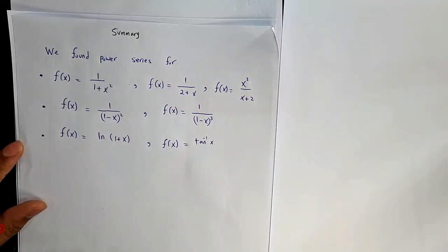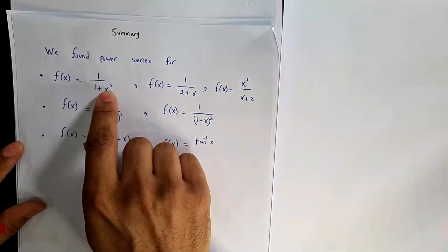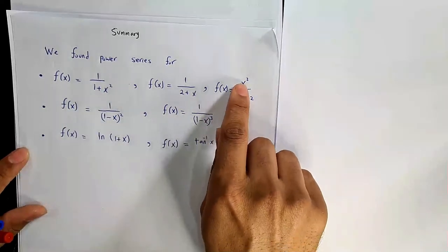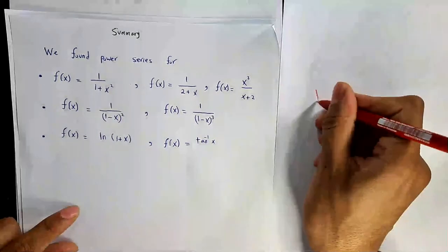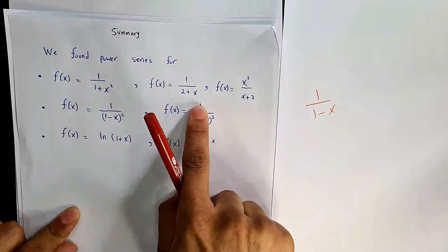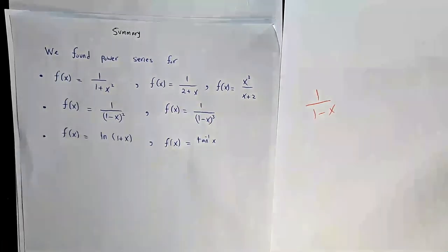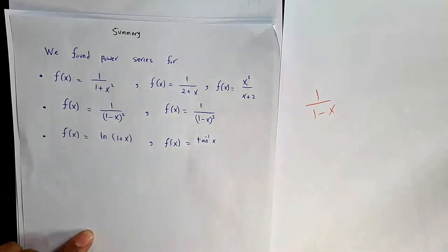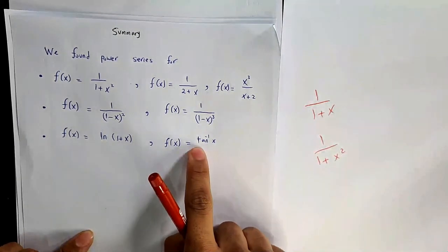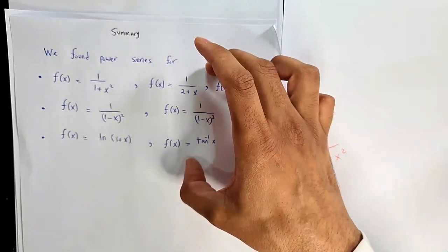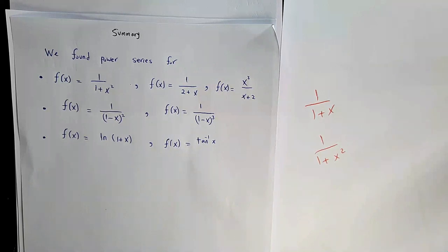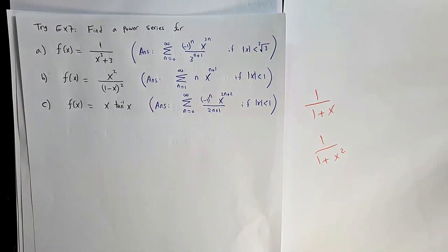Summary: We found power series representations for three groups of functions. Group 1: rational functions like 1/(1±something) or multiplied by xⁿ. Group 2: derivatives of these — e.g., 1/(1-x)² or 2/(1-x)³. Group 3: integrals — ln(1+x) and arctan(x). For sine, cosine, and the exponential function, this method is insufficient — we need section 11.10 (Taylor/Maclaurin series) for the general case.